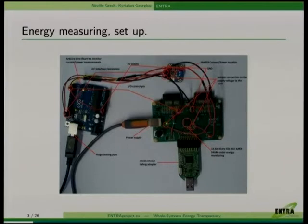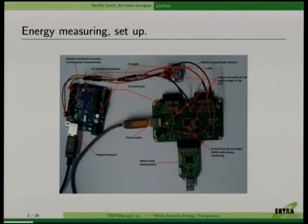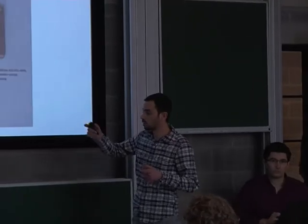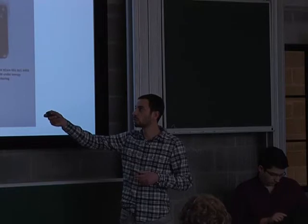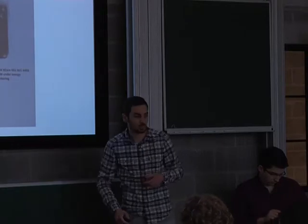How we generally take measurements for energy consumption on various programs: this is an XCore board with a standard INA219 energy measurement board. This is connected via a shunt resistor where you can actually measure the draw current and figure out the energy values from the core. You connect that through the voltage supply of the core, and then you have a monitor board which collects all the energy values and sends them to the physical analysis.